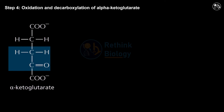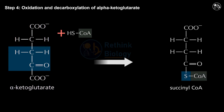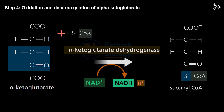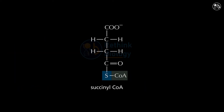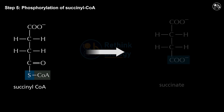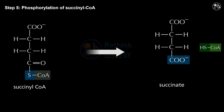Step 4: Oxidation and decarboxylation of alpha-ketoglutarate. In this step, alpha-ketoglutarate is oxidized and decarboxylated to form succinyl-CoA. This reaction is catalyzed by the enzyme alpha-ketoglutarate dehydrogenase and transfers electrons to NAD⁺ to form NADH and H⁺.